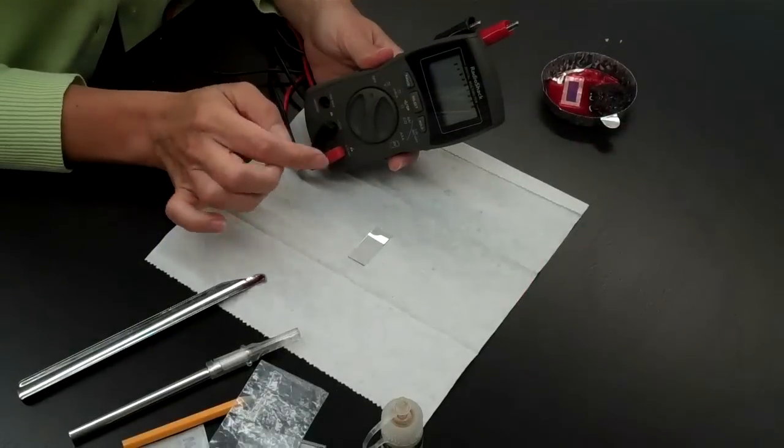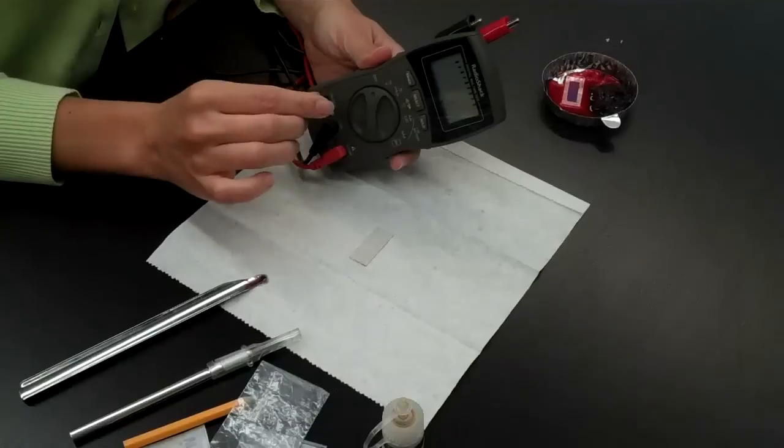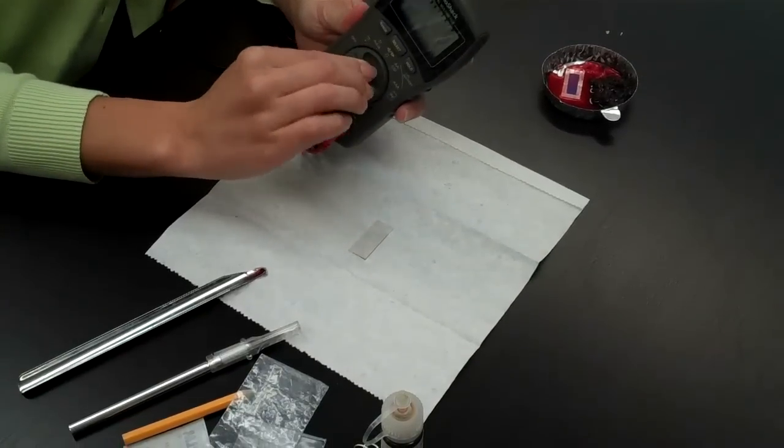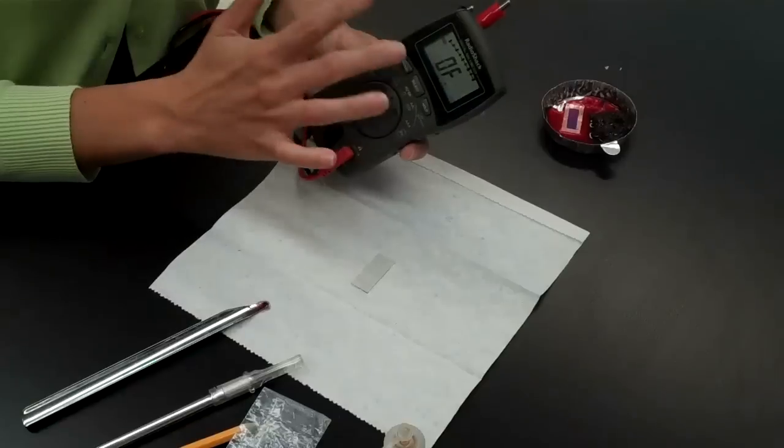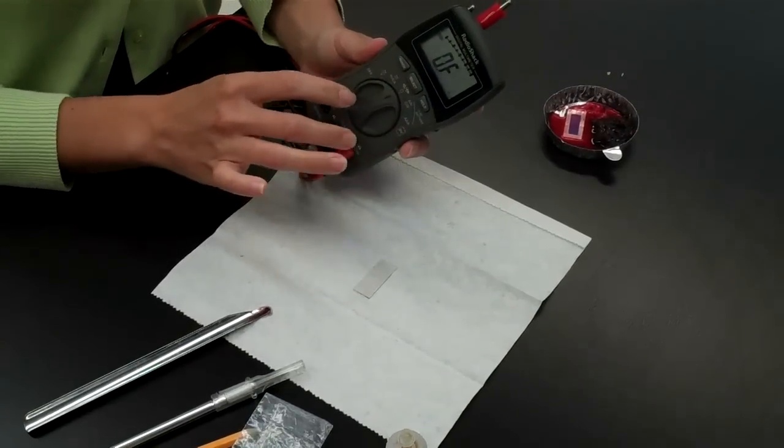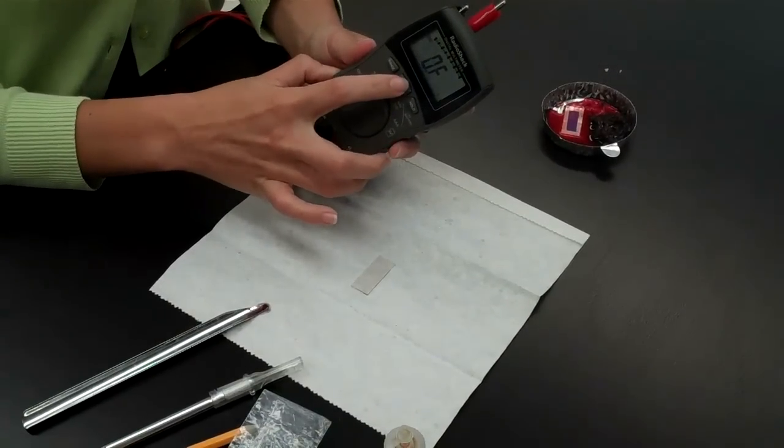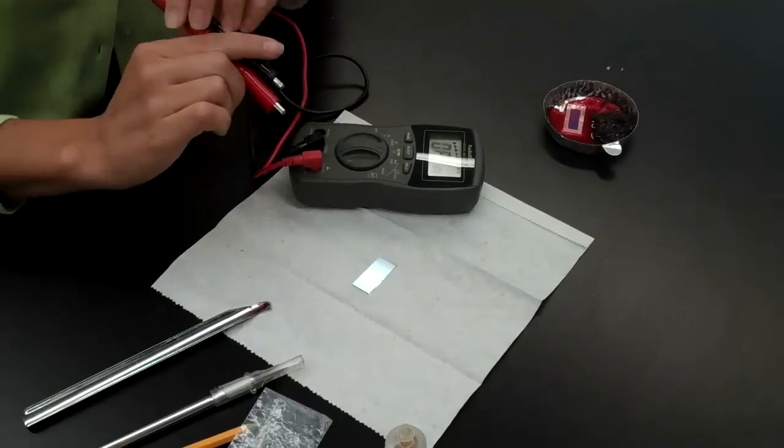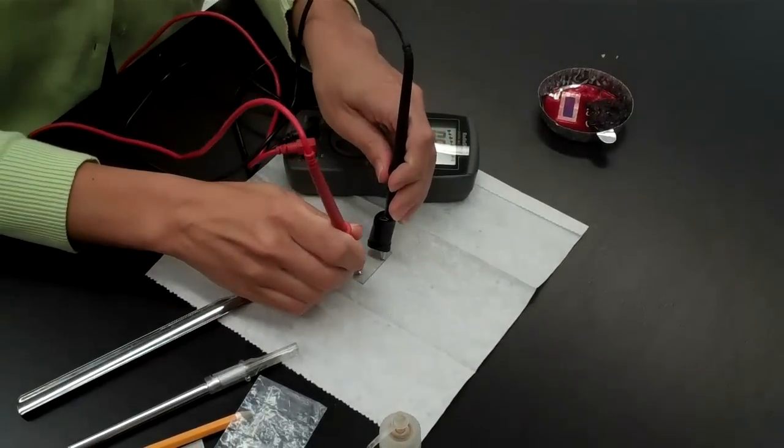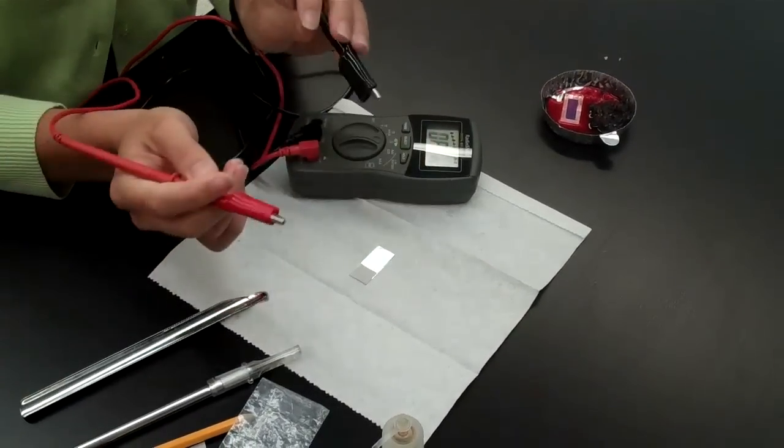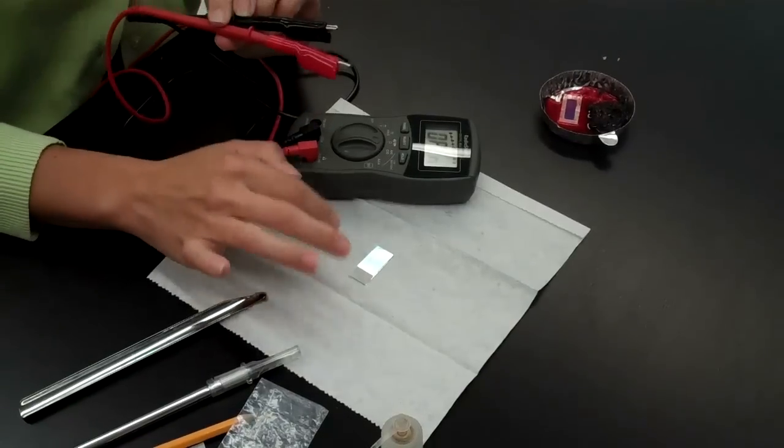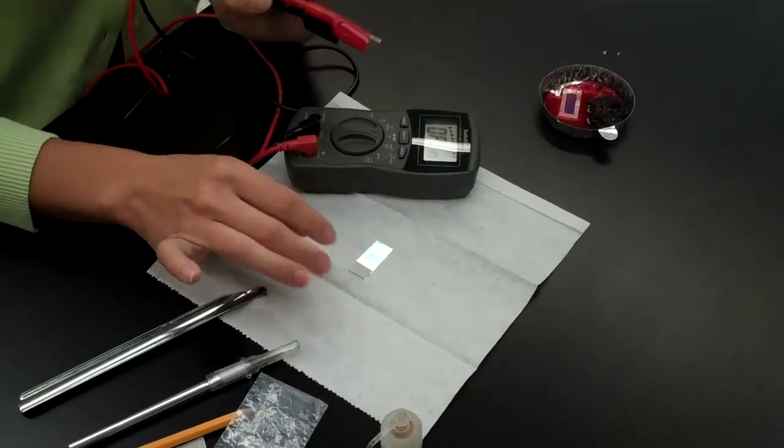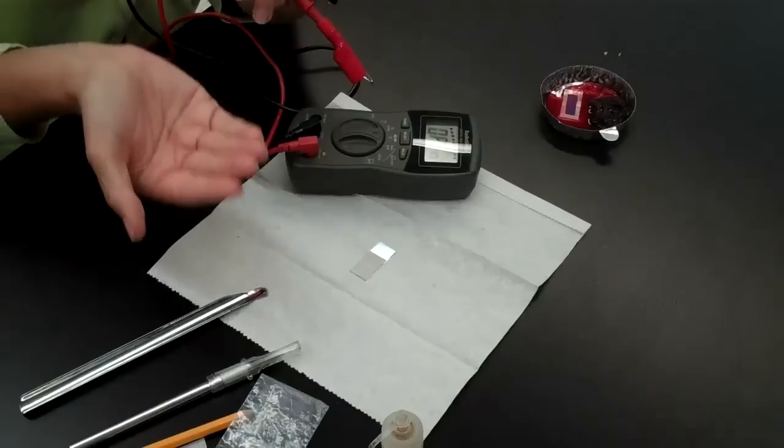To identify which side has the conductive layer, you'll need to turn your multimeter to the Ohm setting, which on this multimeter happens to be in the middle. You can hit the select button to get an audible sound for if it is conductive or not. That tells us that this side is your conductive coated slide, so you'll keep that side facing up.